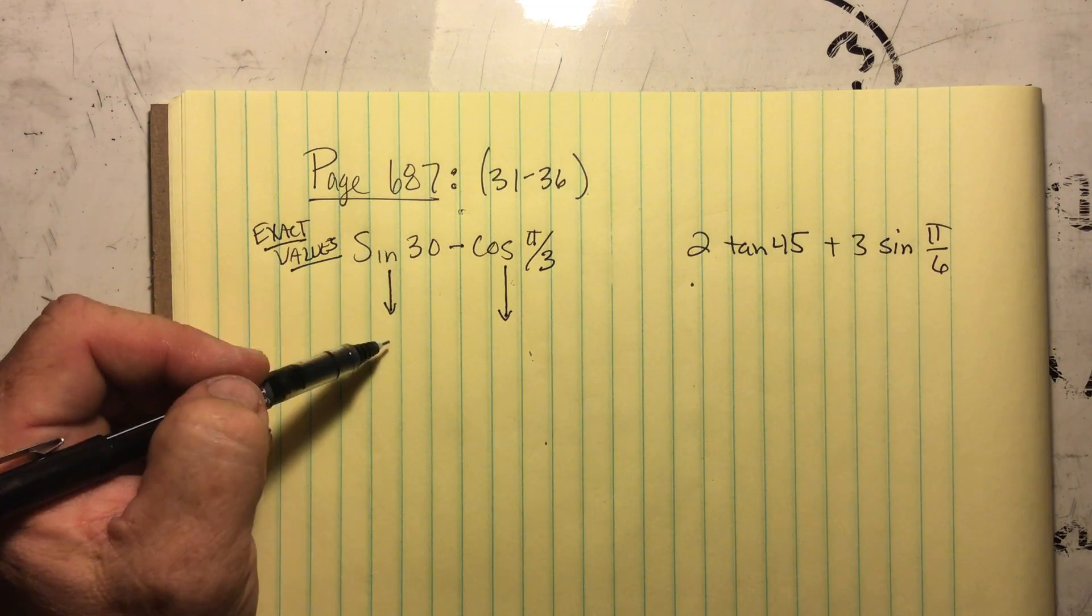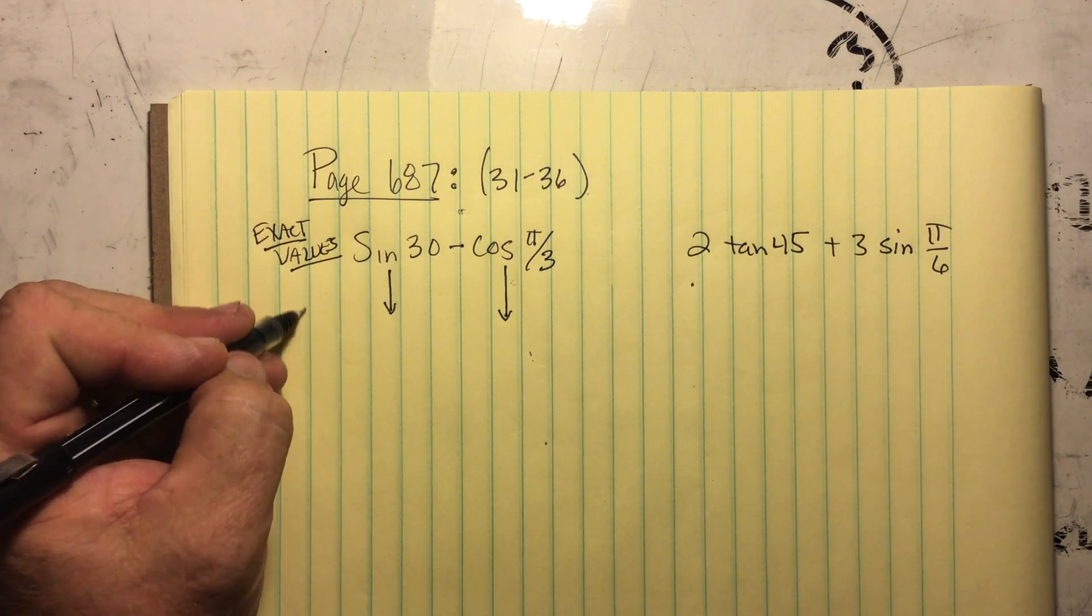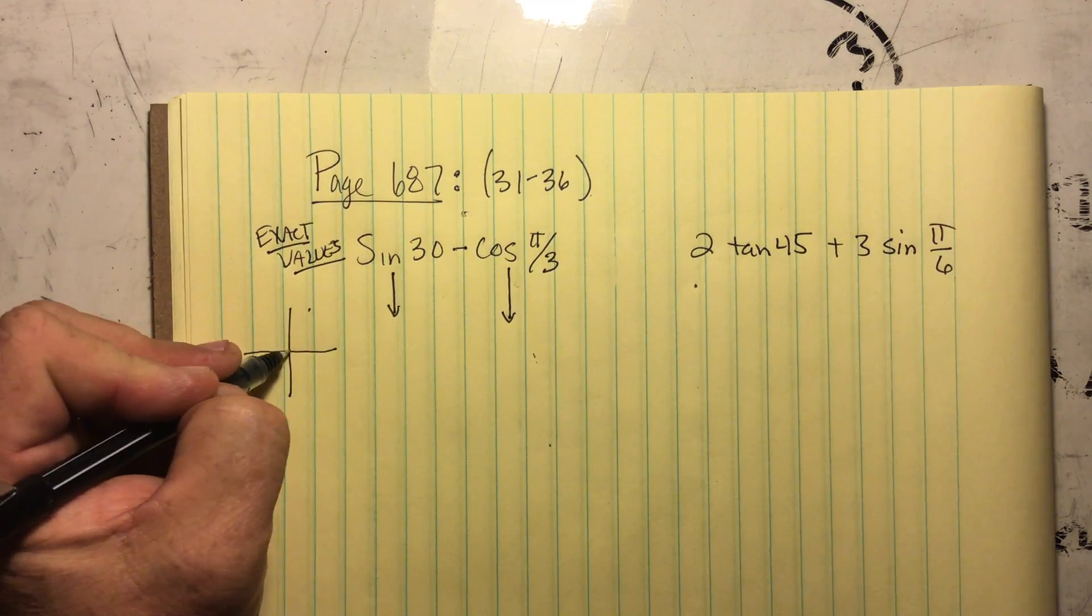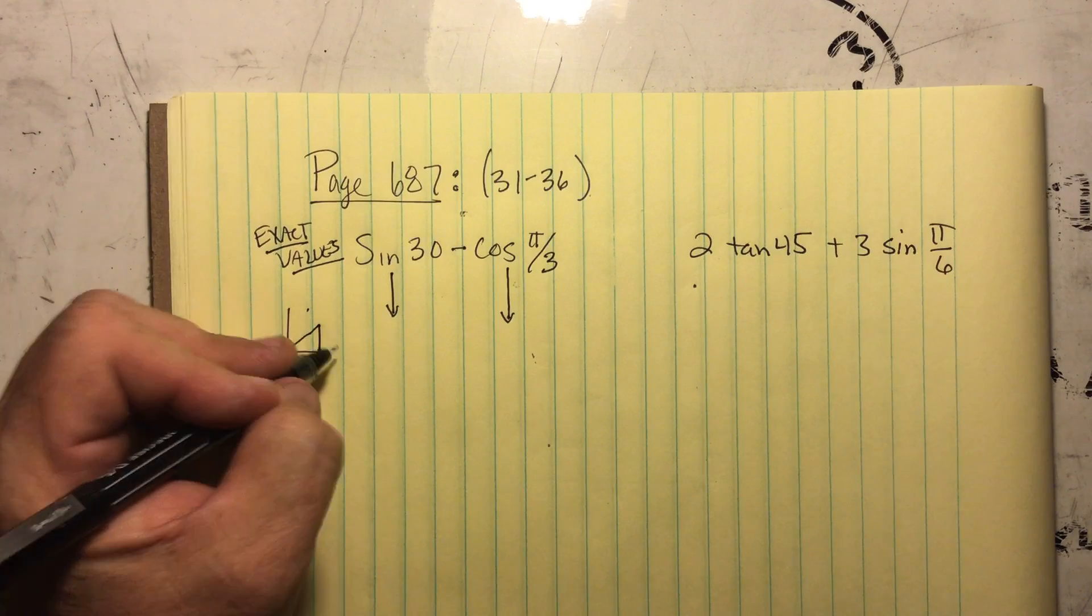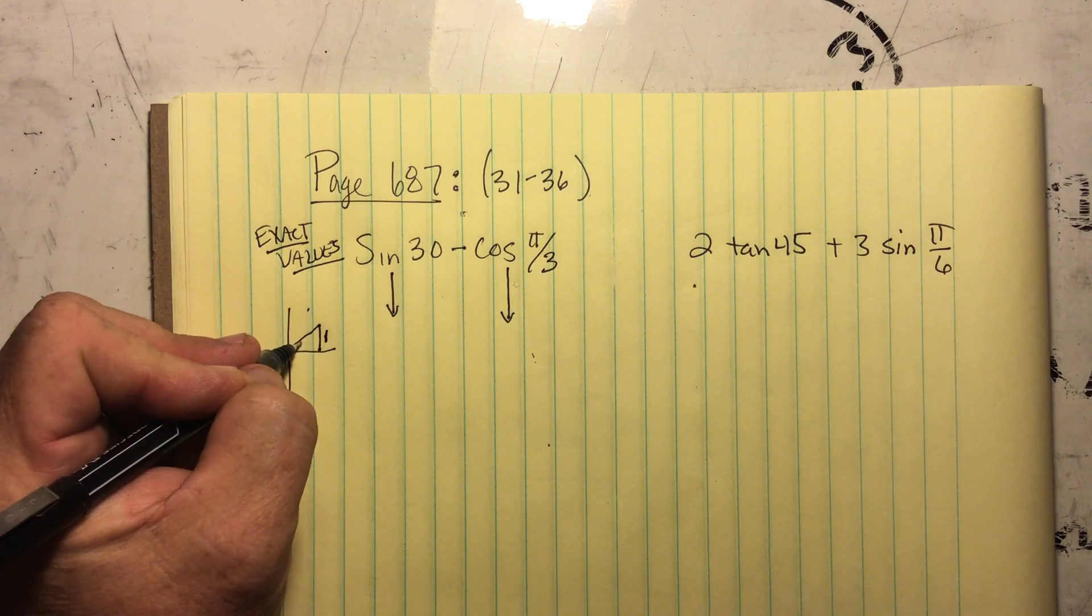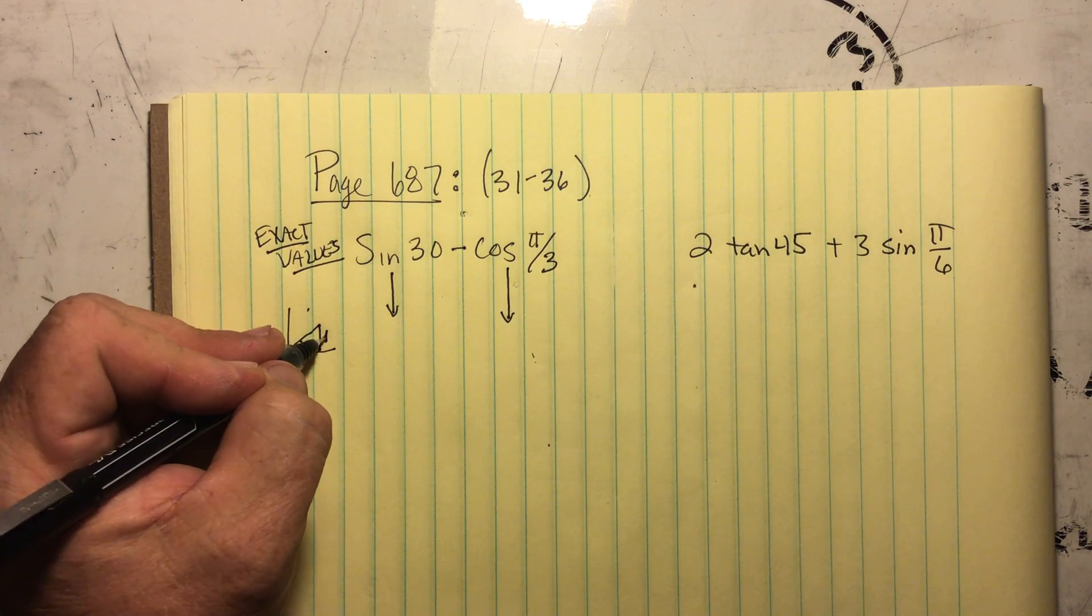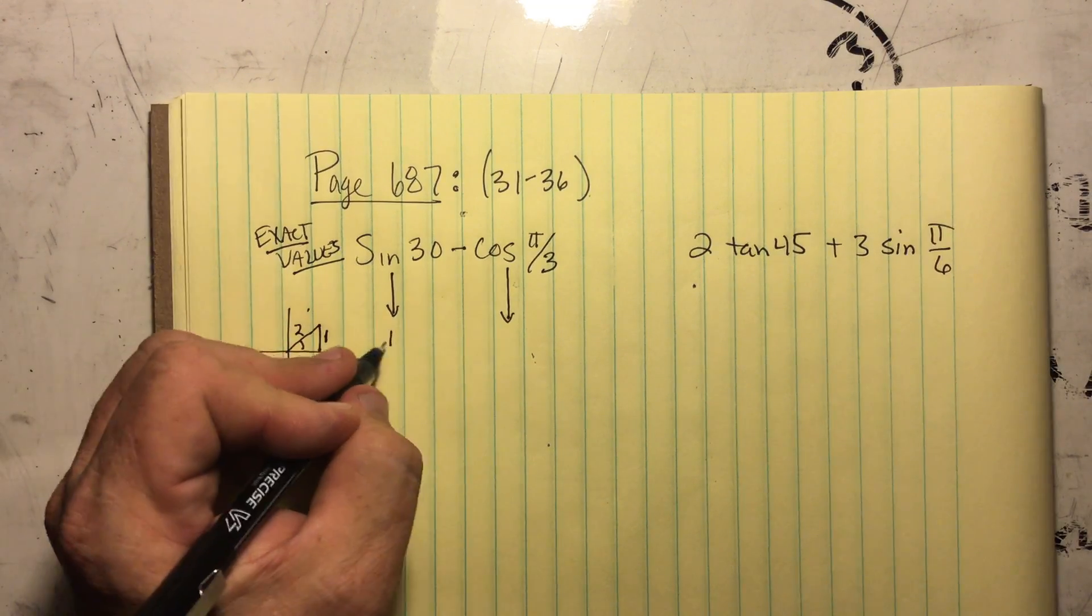They want the sine of 30 degrees. Well, the sine of 30 degrees from the unit circle, if we just kind of draw what we're looking at, it's right here and that means reference angle is 30. So it's going to be 1 over 2. So that's going to be 1 half.